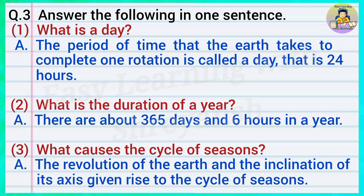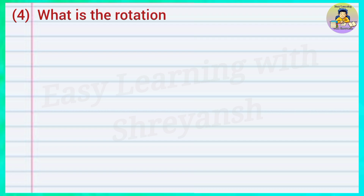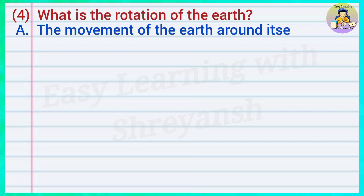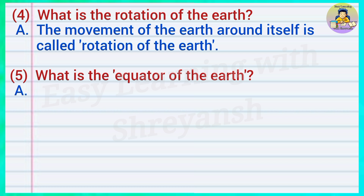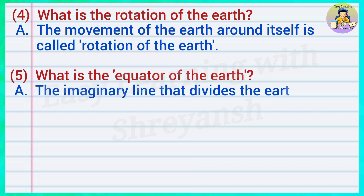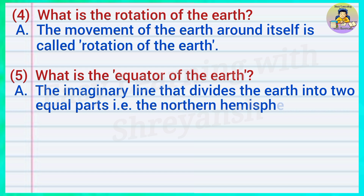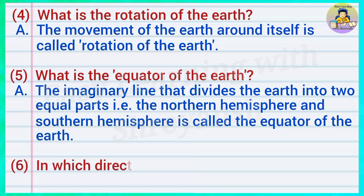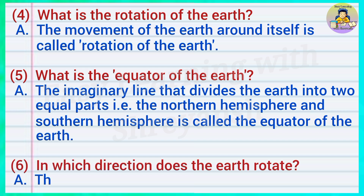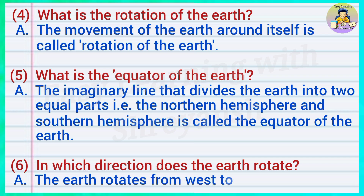Four: What is the rotation of the earth? Answer: The movement of the earth around itself is called rotation of the earth. Five: What is the equator of the earth? Answer: The imaginary line that divides the earth into two equal parts — the northern hemisphere and the southern hemisphere — is called the equator of the earth.